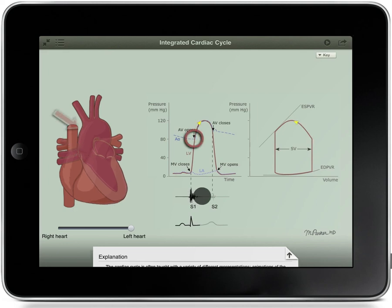You can see how the aorta expands slightly as it receives blood and recoils slightly when the aortic valve is closed to keep blood flowing to the body.